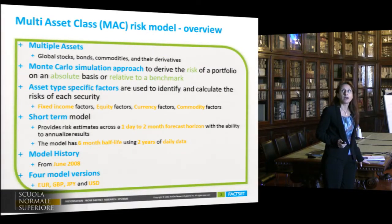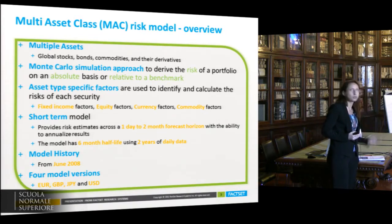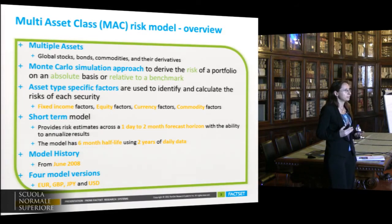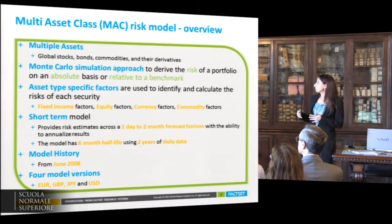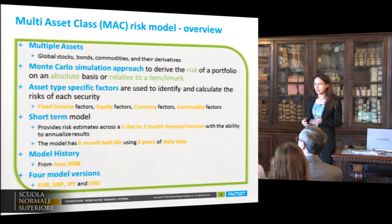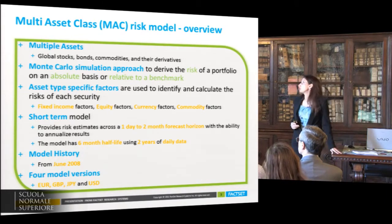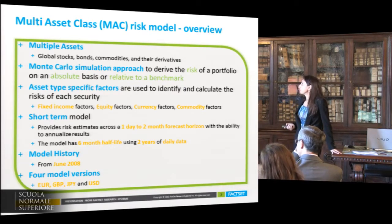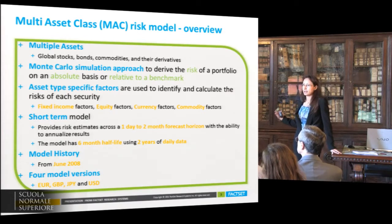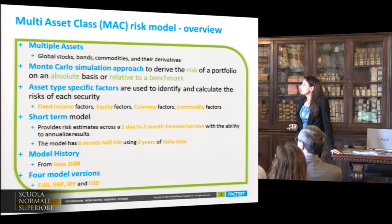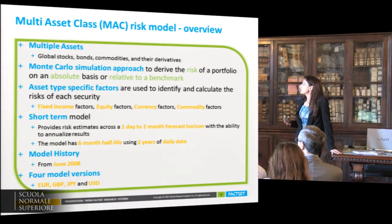The FactSet MAC model is a multi-asset class risk model with global coverage. We cover equity, fixed income, commodities, and their derivatives. The model is a multi-factor model that uses specific factors for each asset type — fixed income, equity, currency, and commodity factors — to identify and calculate risk for each security. The model uses a Monte Carlo approach to simulate returns and risk of the security and the portfolio, both as absolute measure and relative to the benchmark. The nature of the model is a short-term model, so the forecast horizon is one day to two months, and the model uses two years of daily data.